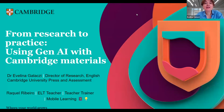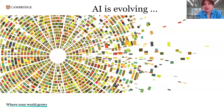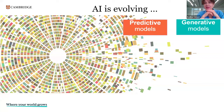Without further ado, we'll get started. Raquel and I are going to focus on using Gen AI with Cambridge materials, but first we'll open up with defining what AI is and how AI has changed. AI models are actually evolving. The good old-fashioned AI models were predictive models, as opposed to the new generation of models which we're working with now — generative models.